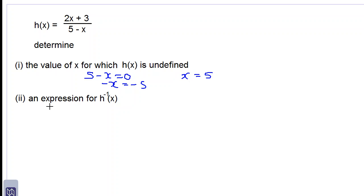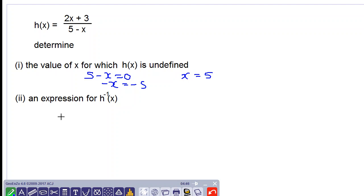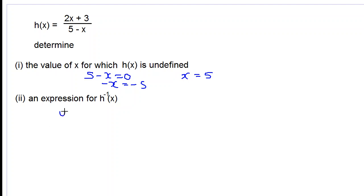Let's find an expression for h inverse of x. Step 1, we replace h of x by y, so we have y is equal to 2x plus 3 over 5 minus x. We now interchange x and y, so we have x is equal to 2y plus 3 all over 5 minus y. We now make y the subject of the formula.